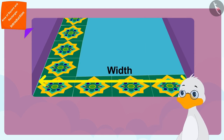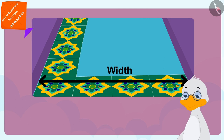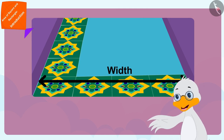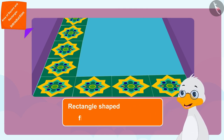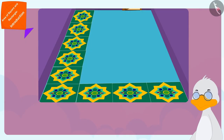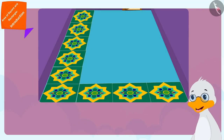There are a total of four one meter long tiles in the width of my floor. That means my rectangle shaped floor has a width of four meters. But how do I find out how many tiles it will take to completely cover my floor?